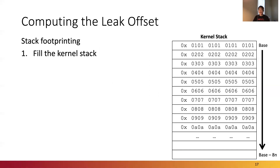To compute the leak offset, we use the stack footprinting technique. First, we fill the kernel stack with offset information for each byte from the base address. We store one byte offset information, starting from 0x00 to 0xFF, in each byte for every 8 bytes. This mechanism allows us to footprint 2,024 bytes of the kernel stack. Even though we cannot footprint the entire kernel stack, 2,000 bytes are enough to deal with most syscalls, because roughly 90% of syscalls only use less than 1,260 bytes of the stack.